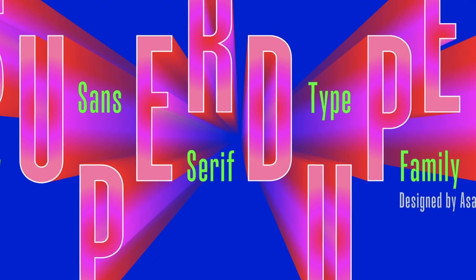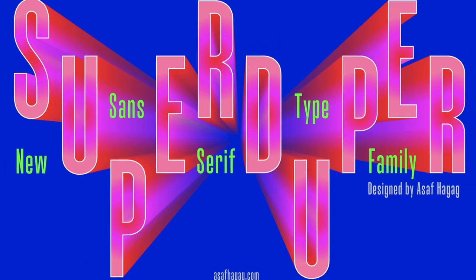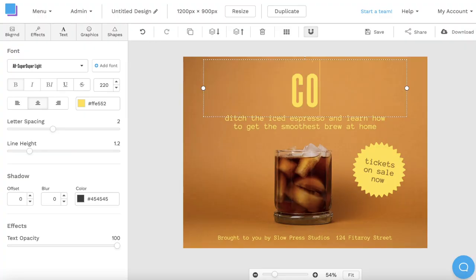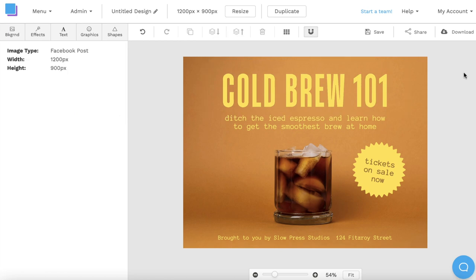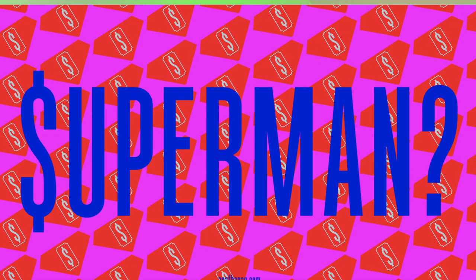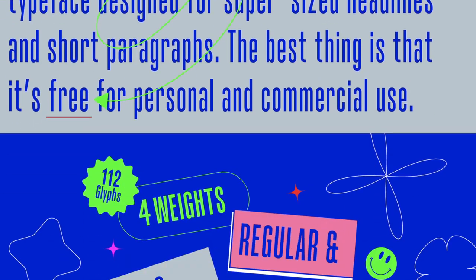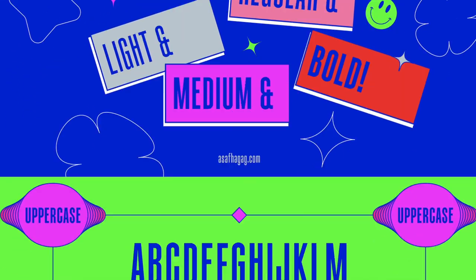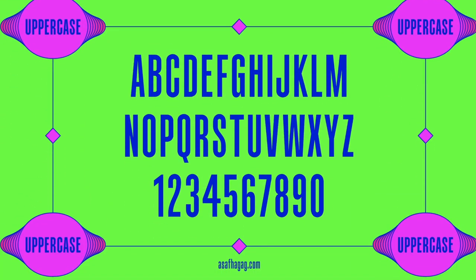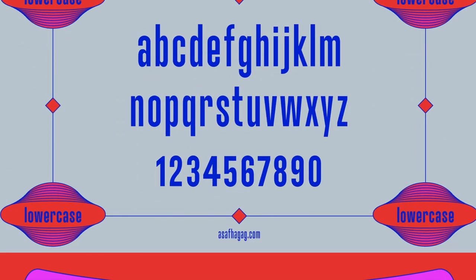The fourth font on the list is SuperDuper. Its long, angular letters can add a unique flair to almost any design, but it's still simple enough to use for generic projects as well. Since SuperDuper is fairly easy to read, you'll be able to use it for your social media posts, collages, thumbnails, and more. It's great for creating branded visuals.